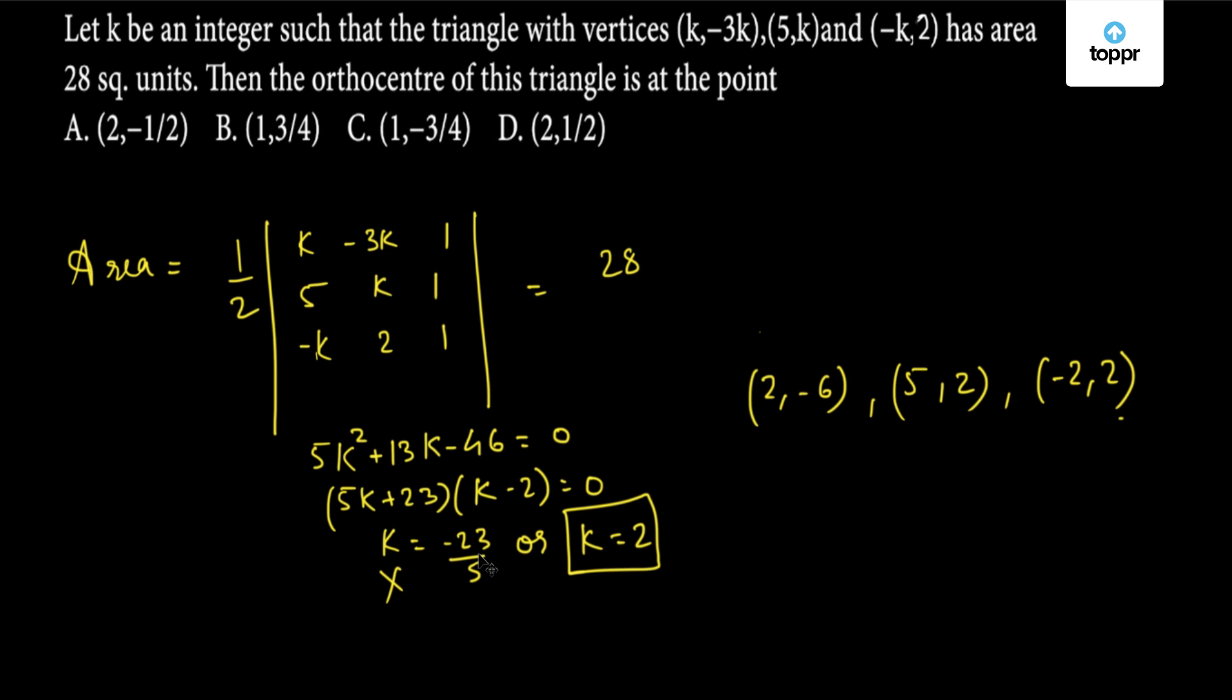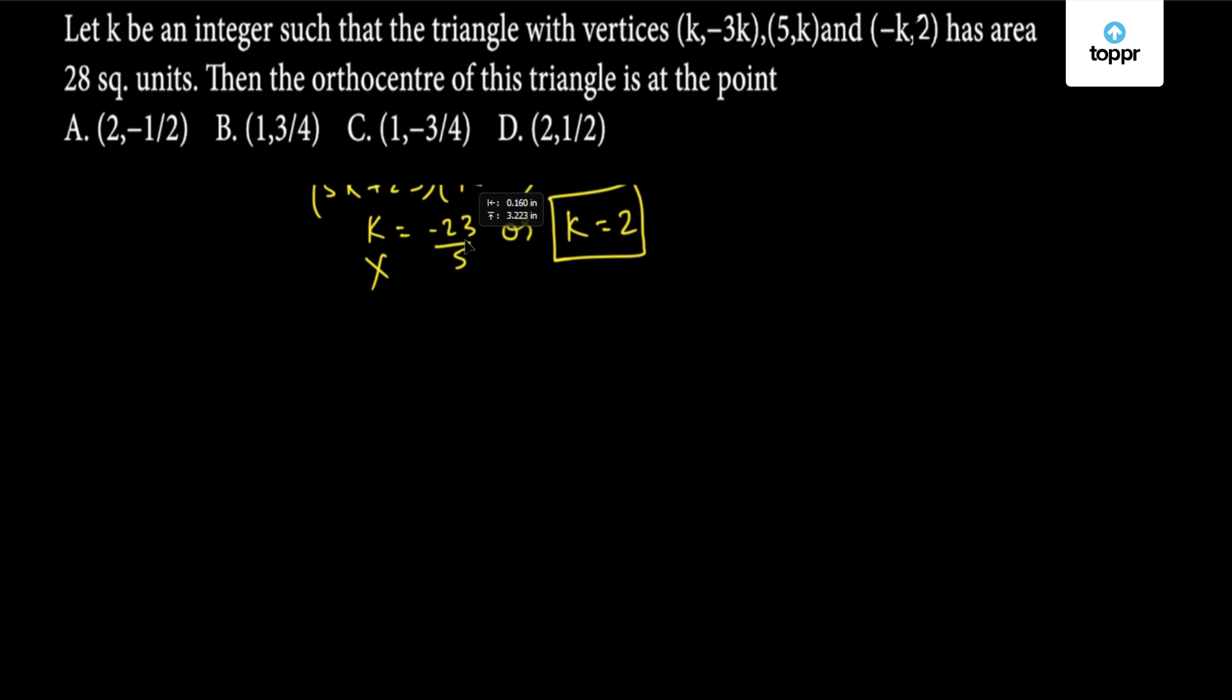The orthocenter is the point of intersection of the altitudes of the sides of the triangle, which means we will first find the equation for the altitudes of any two sides of this triangle and then find their point of intersection.